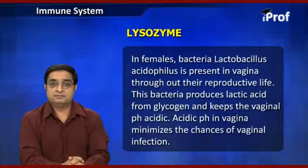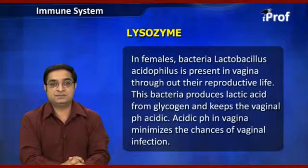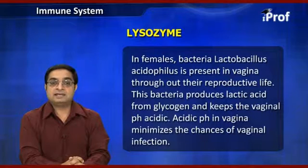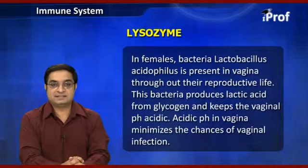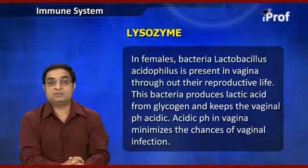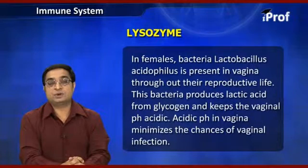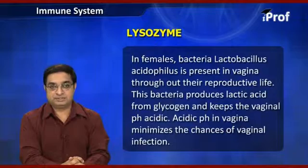During their reproductive life, this bacteria produces lactic acid from glycogen and keeps the vaginal pH acidic. Acidic pH in the vagina minimizes the chances of vaginal infection.